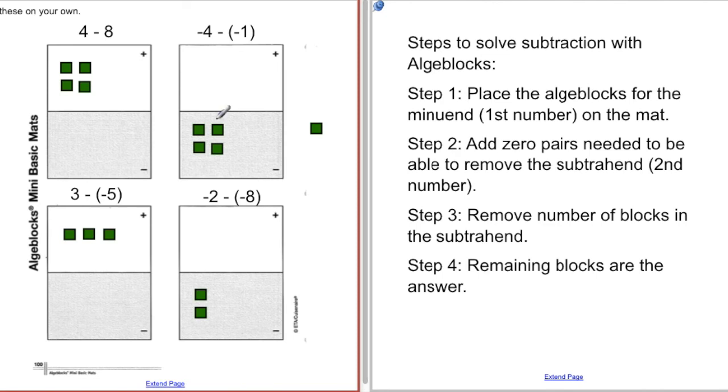Okay, let's see how you did. So we start with 4 minus 8. So you got 4. You can't take away 8, so we need to add a bunch of zero pairs here. Okay, now that I've added enough zero pairs, I still have 4 up here, but I can take away 8. Take that 8 away. And I get negative 4. So 4 minus 8 equals negative 4.